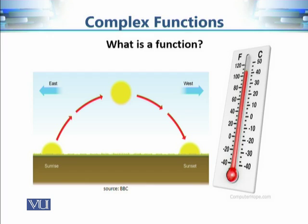Time is the independent quantity in this example, and temperature depends on it, so we say temperature is a function of time. More precisely, when I take a reading of temperature at any particular time, it gives me precisely one temperature value — not two. We cannot say that at 9 o'clock the temperature is both 20°C and 30°C.